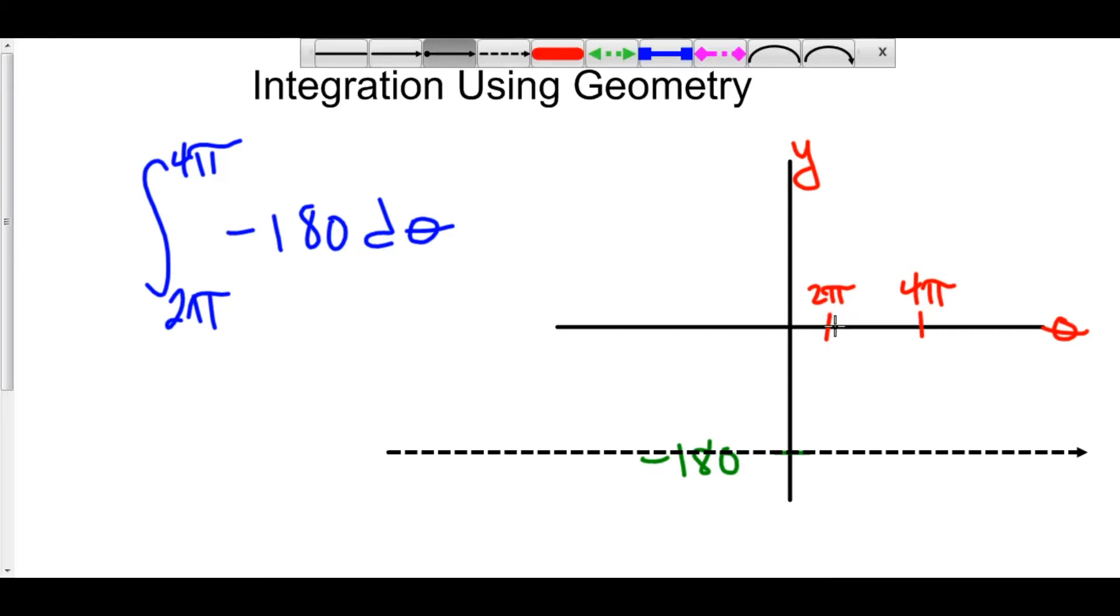We can take a look at our area that we are creating here. We're looking at the area between the curve y equals negative 180 and the theta axis. So here is our shaded in part that we are trying to find the area of.